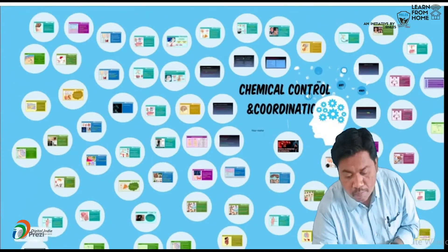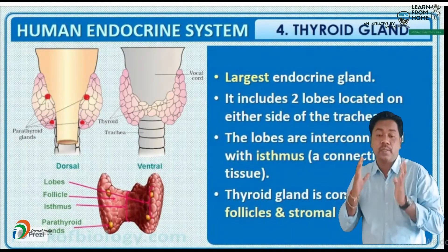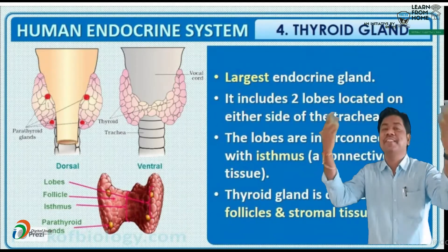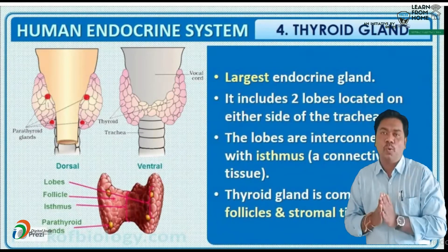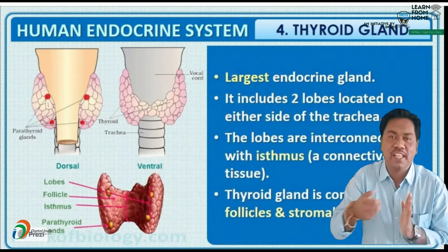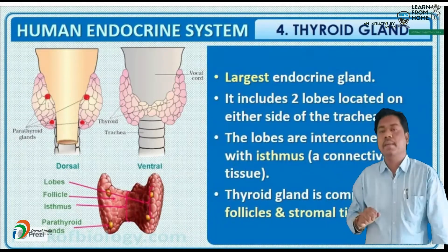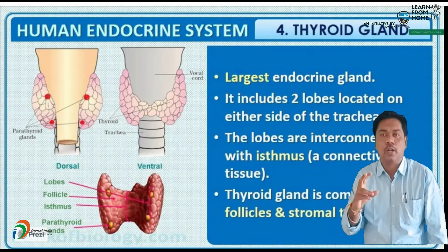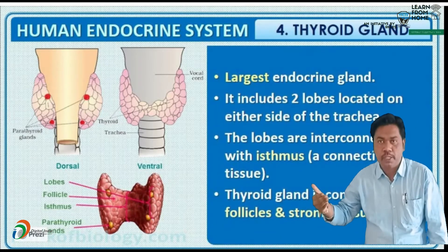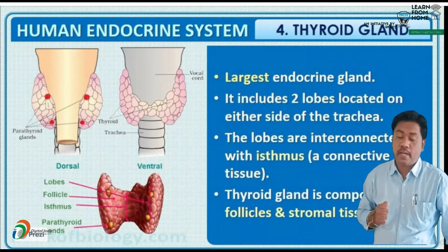The thyroid gland is located on either side of the trachea. It consists of two lobes — the right lobe and the left lobe. These lobes are composed of different kinds of cells: follicular cells and stromal tissues. The combination of stromal tissue and follicular cells makes up the thyroid lobe.